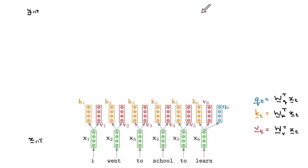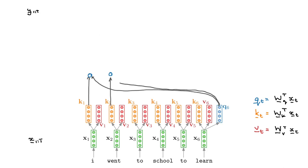Now, considering the sixth position, we're going to take the scaled dot product between the first key and our query, the second key and our query, the third key and our query, the fourth key and our query, the fifth key and our query, and the sixth key and our query.